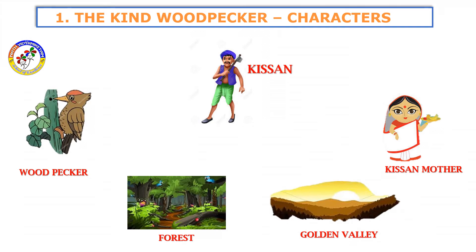The characters in The Kind Woodpecker are: Woodpecker, Kisaan, Kisaan's mother, Forest, and Golden Valley. These are the characters in the lesson The Kind Woodpecker.